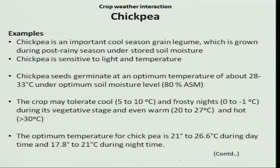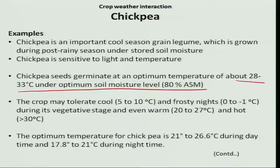Chickpea seeds germinate at an optimum temperature of about 28 to 33 degree Celsius coupled with optimum soil moisture — that is almost 80 percent of available soil moisture. The nature of the seeds also determines the weather requirement of the crop. The seeds are bigger in size; therefore, they require more moisture, and are also covered with a thick seed coat which requires slightly higher moisture to catalyze the germination process.